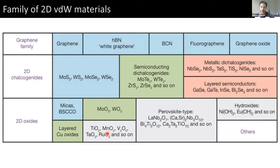Over the past 15 or 16 years, we've learned that there's a wide family of van der Waals materials that can be isolated down to an atomic monolayer using a Scotch tape exfoliation technique discovered by researchers at the University of Manchester. They first used this for graphene, but now we have dozens or over 100 materials which we can isolate down to an atomic monolayer.